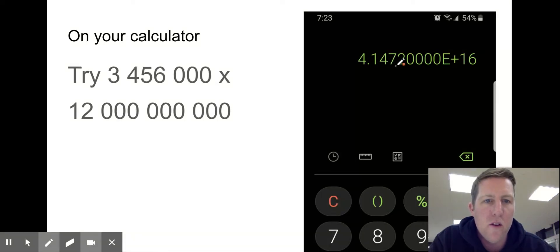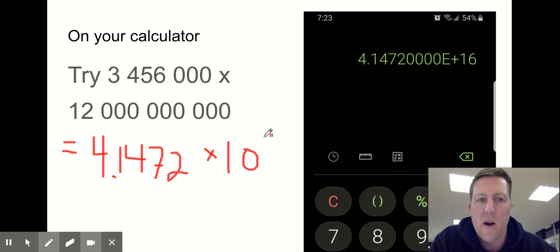I get 4.1472000E+16. What this means is that this answer, 3,456,000 times 12 billion, is 4.1472 times 10... I kind of gave it away there when I was talking... times 10 to the power of 16.